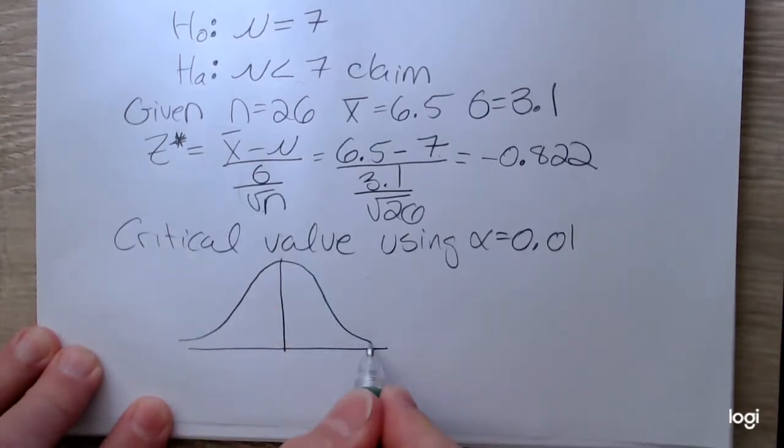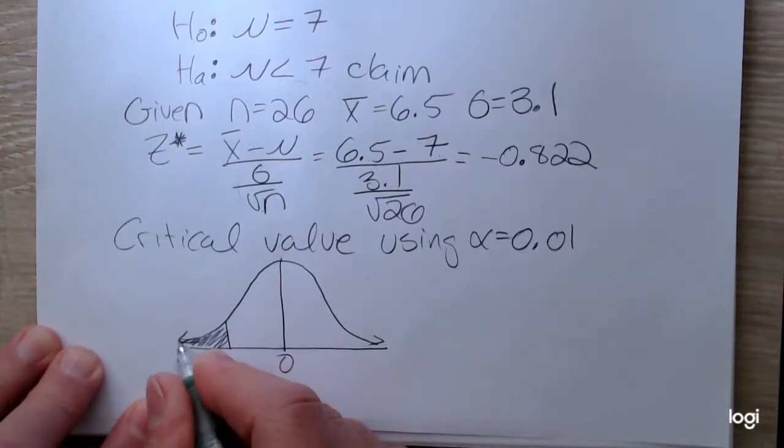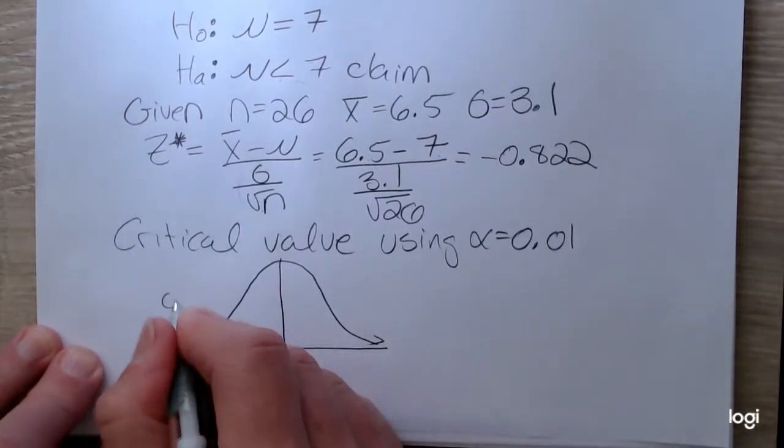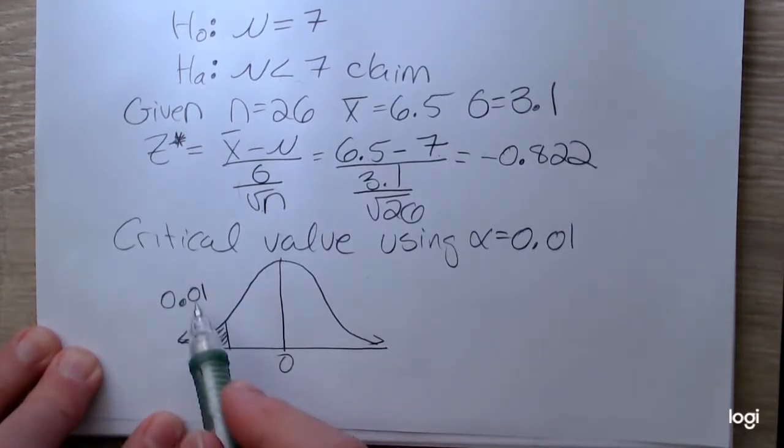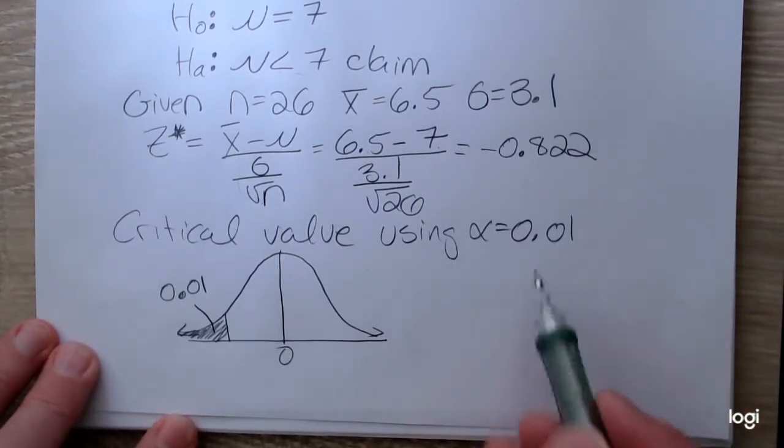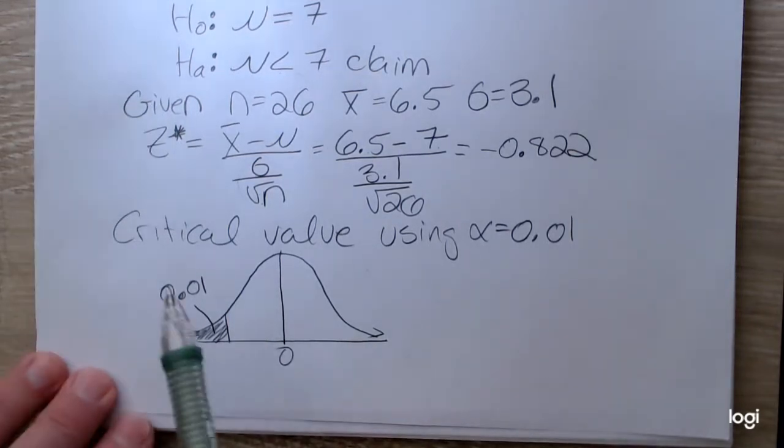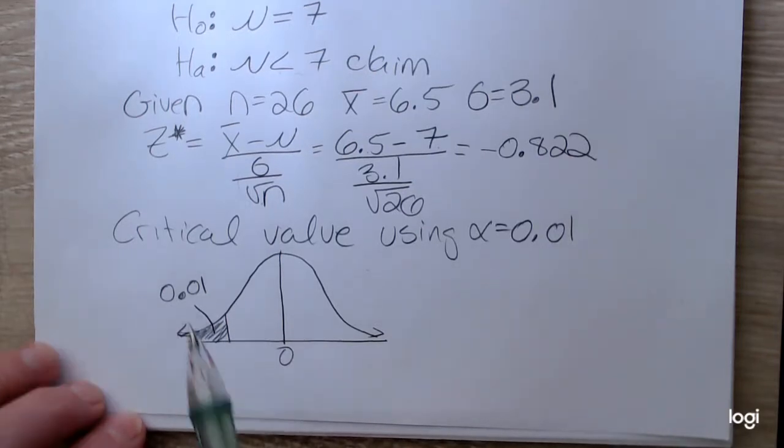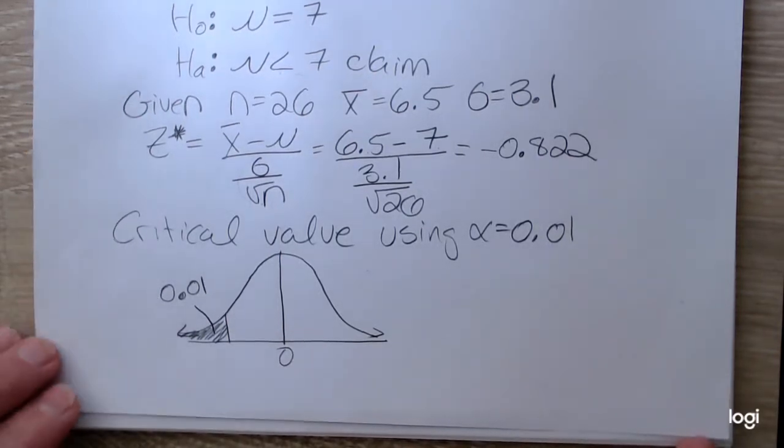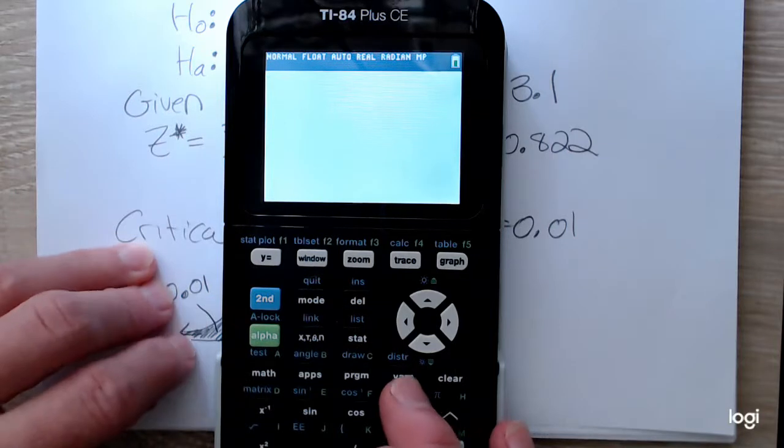So sketching a standard normal distribution, putting 0 in the middle. I'm shading my area of rejection, and that area is 0.01. Remember, the level of significance is an area. It's also a probability, the probability of a type 1 error. And there's a couple ways to get the critical value. You could use your z-table and read in the body of the table to 0.01 and outwards to find that z-score. Or you can use your inverse normal function in the calculator.